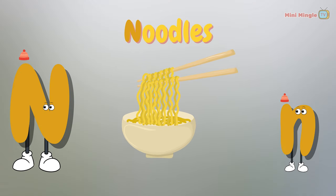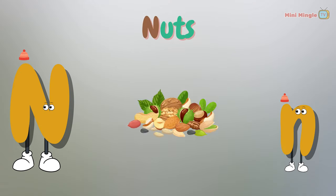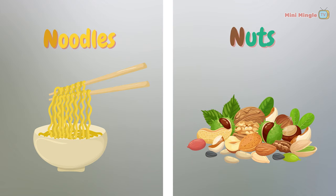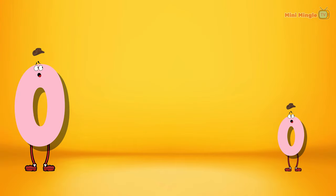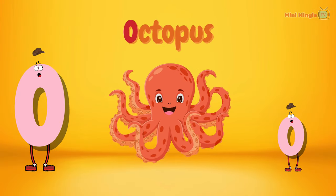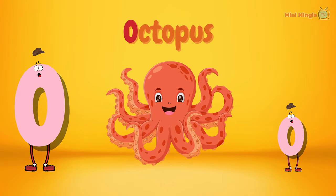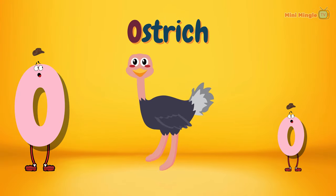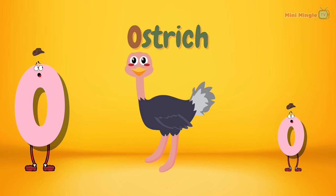N for noodles. N for nuts. Noodles and nuts. O for octopus. O for ostrich.